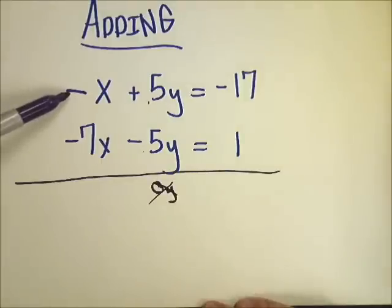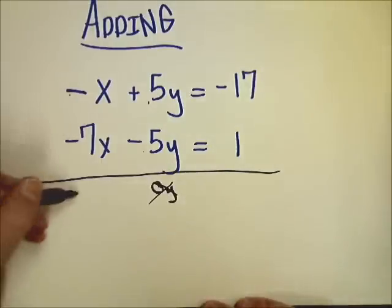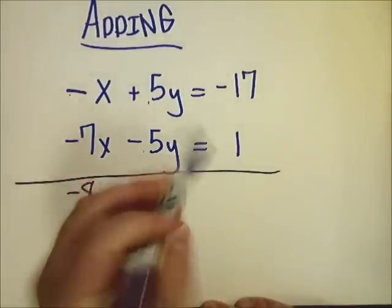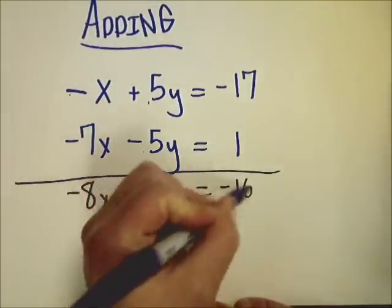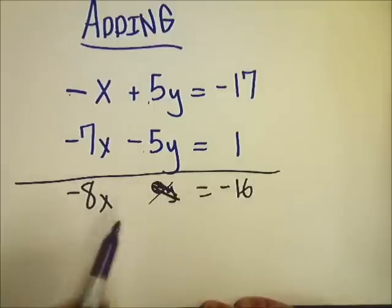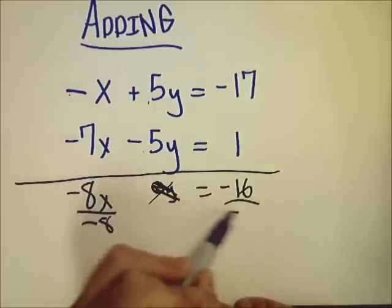Over here, I need to do negative 1 plus negative 7, which is negative 8x. And then I do negative 17 plus 1, which gives you negative 16. So I can easily solve this. Divide by negative 8, x is equal to 2.